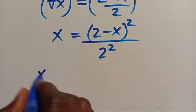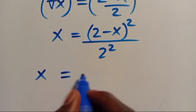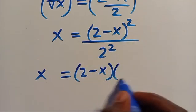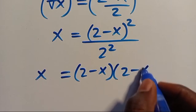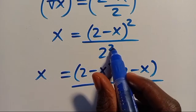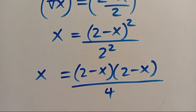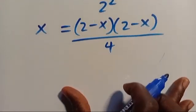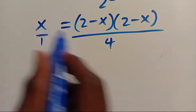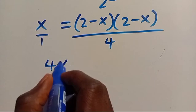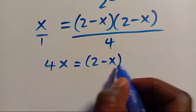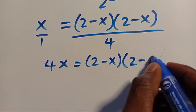From here we have X equals — let's expand this: 2 minus X in parenthesis, divided by 2, times 2 equals 4. So when you cross multiply, 1 times X times 4 gives us 4X equals 2 minus X in parenthesis multiplied by 2 minus X.